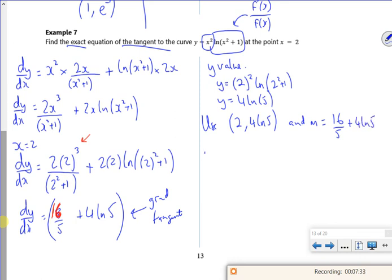So I've got y minus 4 log 5 is equal to m, which is 16 over 5 plus 4 log 5, times x minus 2. Done. Dusted. Finished.